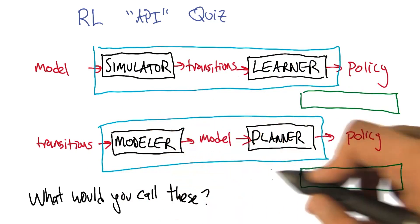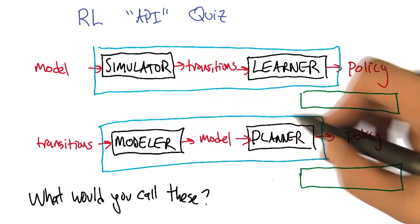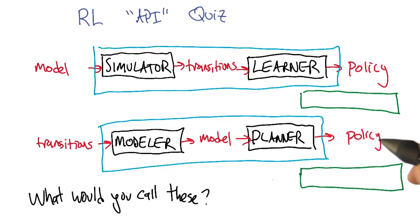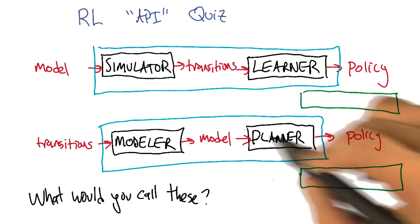What would you call this whole box? As a whole box, it takes transitions in and produces policy out. So it is solving a reinforcement learning problem, but it's taking a very particular approach to it.